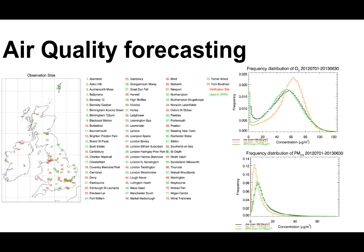One nice thing the AQM team has done is develop statistical post-processing techniques, shown in work from Lucy's atmospheric environment paper. Just like all models, when we run something like UKCA there are biases. For air quality forecasting, particularly for providing forecasts to policymakers, it's really important that biases are minimised so we can have accurate information on what might happen in the next few days — especially during air pollution events where people may be told to stay indoors or have other interventions placed on them.